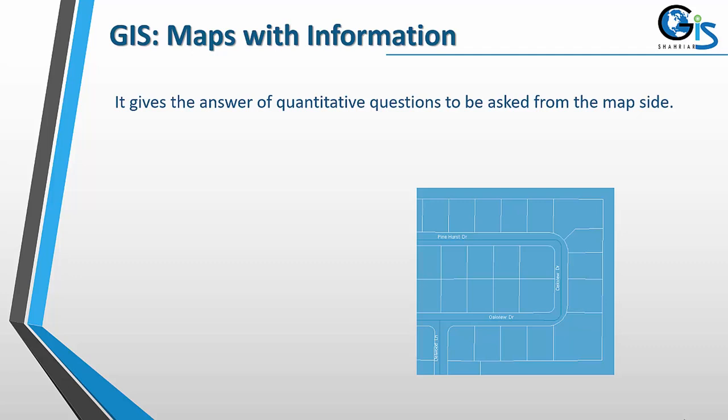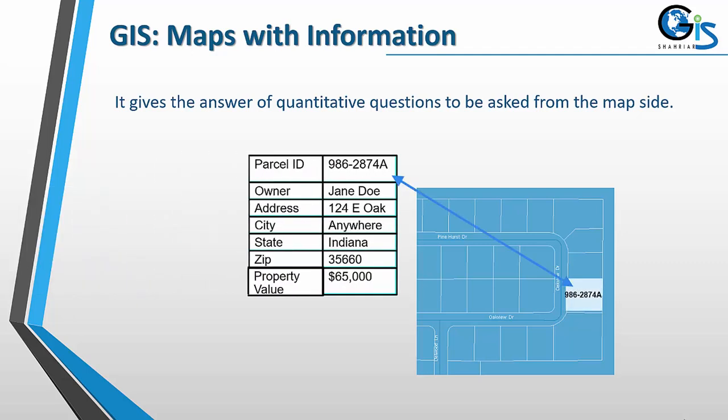By the help of GIS we can get many answers to quantitative questions — such as the plot number, the owner name, the address, city, state, zip, and property value. Any type of quantitative question can be answered by GIS because GIS contains a map with a database. This data provides us information, and from that information we get the answers to quantitative questions. Not only that, GIS helps us to join and relate one database with another database.